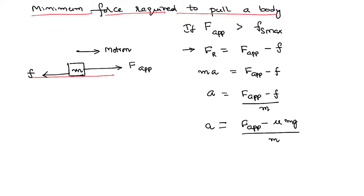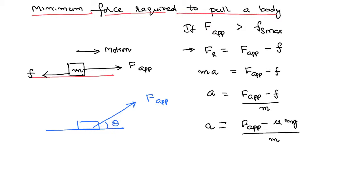Practically, this is not always the case. For example, if you want to pull a suitcase on a railway platform, we never pull the suitcase horizontally along the floor like that. We pull the suitcase by holding it with our hand where our hand makes some angle with the horizontal. So in practical life we apply the force by making an angle theta with the horizontal. To apply the force purely horizontally we would have to lay down on the floor, which we never do.